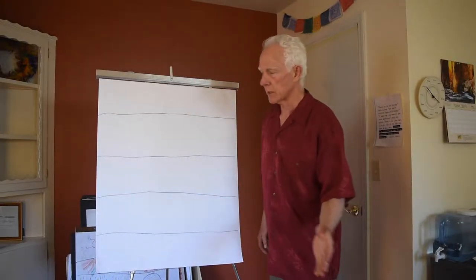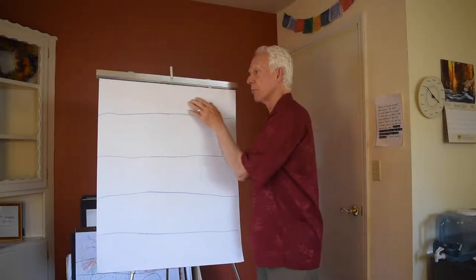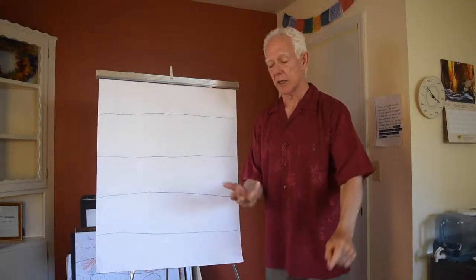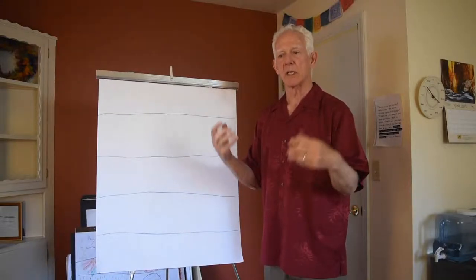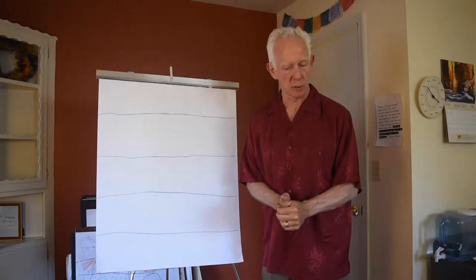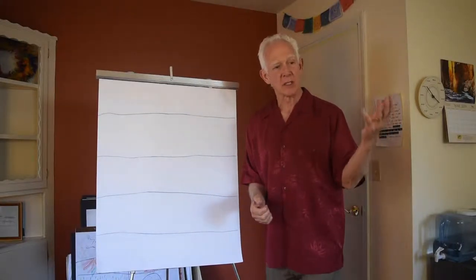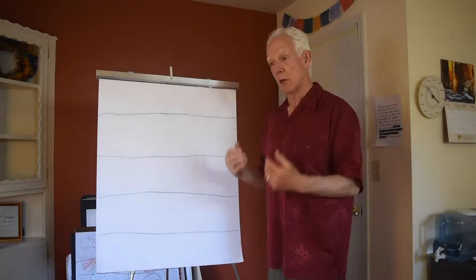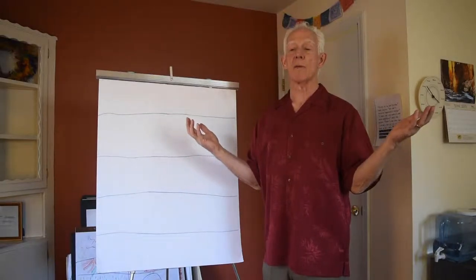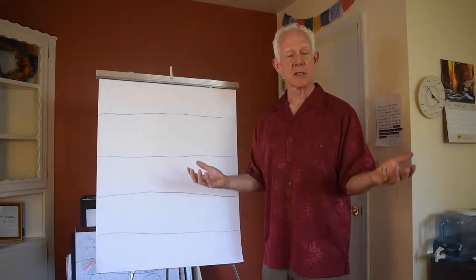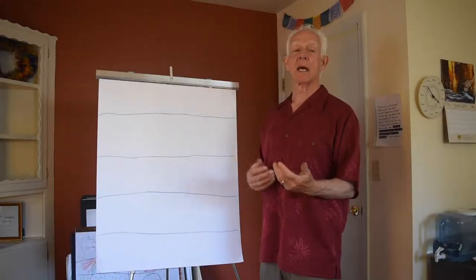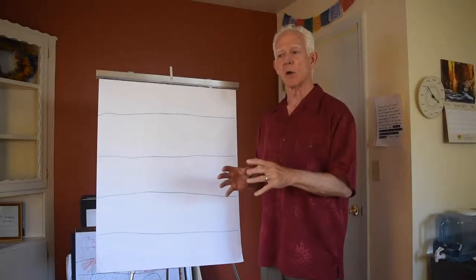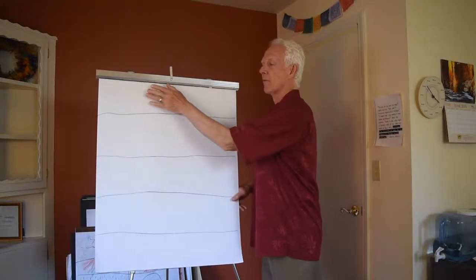The five sequence drawing process — the first thing we're going to do is put a storyboard of a pattern, of a strength, of a really important question that I would like to create an experience of positive difference with. This could be a place where I get stuck internally or in different relationships, it could be a strength, one of the ways I am with myself and other people that is a big positive, or a place in my life where I have a really important question I'd like to explore. Any of those are relevant ideas for a story.